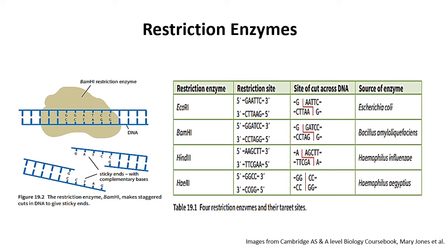Looking at restriction enzymes again in more detail — I've seen questions where students have to work out things based on where the DNA is cut, and I'll try to do a past question on that. ECO-R1, BAM-H1, and HIND-3 all cut in a staggered fashion producing sticky ends. However, HAE-3 cuts a blunt end. It's important to know that and to pay attention to the sequences or regions where they cut so that when you come across them in the exam, you're not too lost.